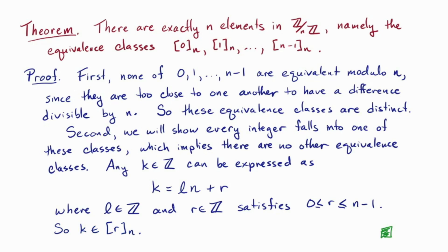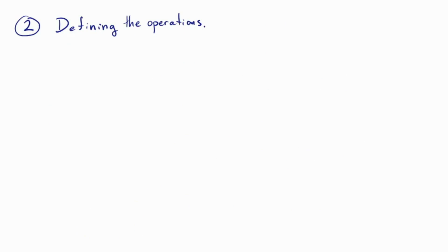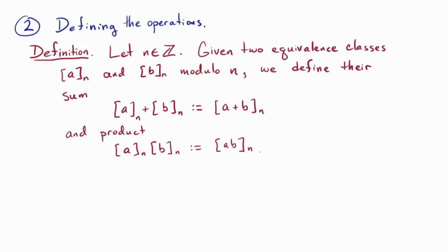Okay, we've created the elements. We're done with part one. Now let's move to part two, defining the operations. Definition. Let n be an integer, given two equivalence classes, a and b modulo n. We define their sum, a plus b, to be the equivalence class of a plus b, and their product, a times b, to be the equivalence class of their product, a times b.